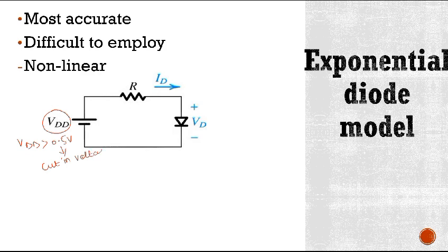What is this cut-in voltage? If you remember that in forward region, the curve is something like this. This is current and this is voltage. The cut-in voltage is the voltage after which the diode current rapidly increases.